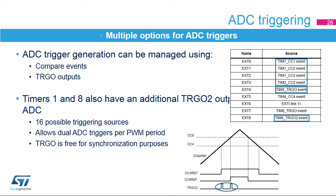The ADCs can be triggered with most STM32 timers using three options: compare events, where the ADC conversion starts on a given compare frame; the TRGO event, which gives extra flexibility since the TRGO can be any compare event or timer internal control signal such as register update, counter reset, or trigger input. Timers 1 and 8 also have an additional TRGO2 output fully devoted to ADC triggering, offering 16 possibilities including six compare events and a dual trigger per PWM period by combining compare four and six events, leaving TRGO free for multiple timer synchronization.